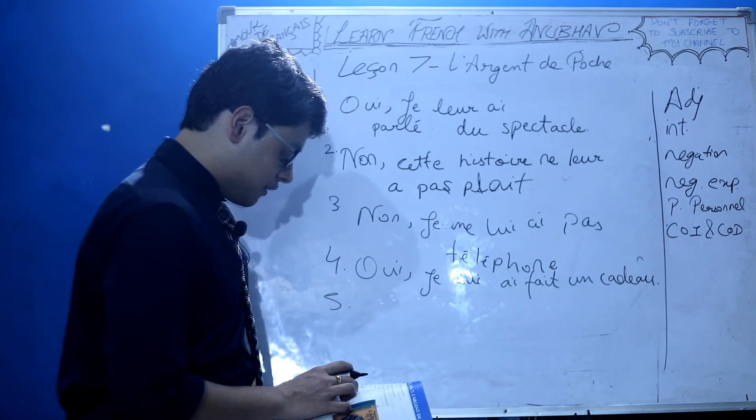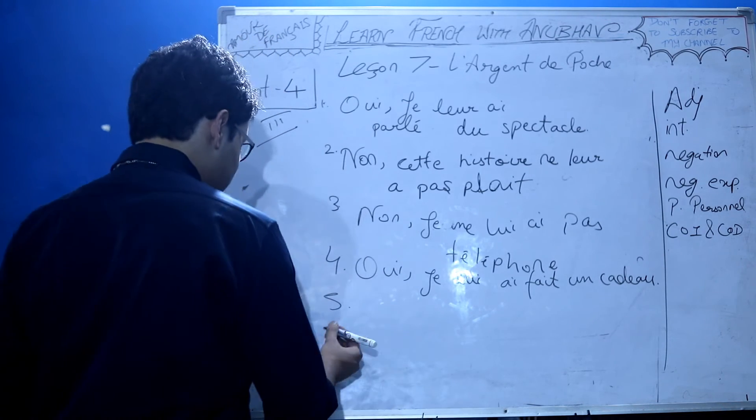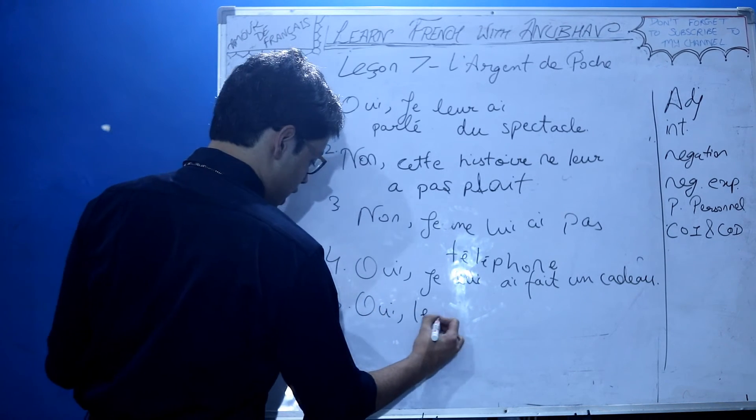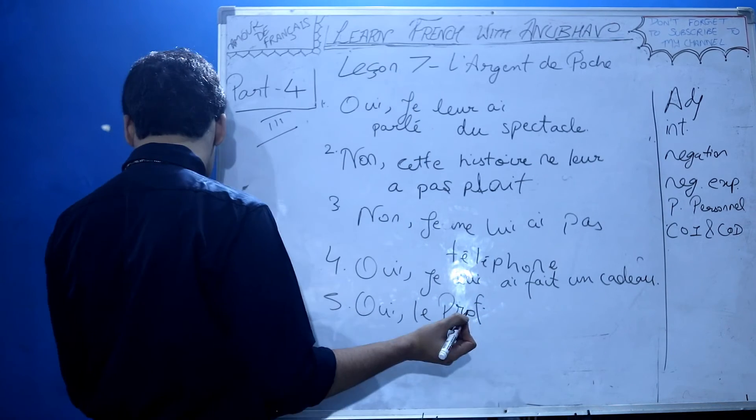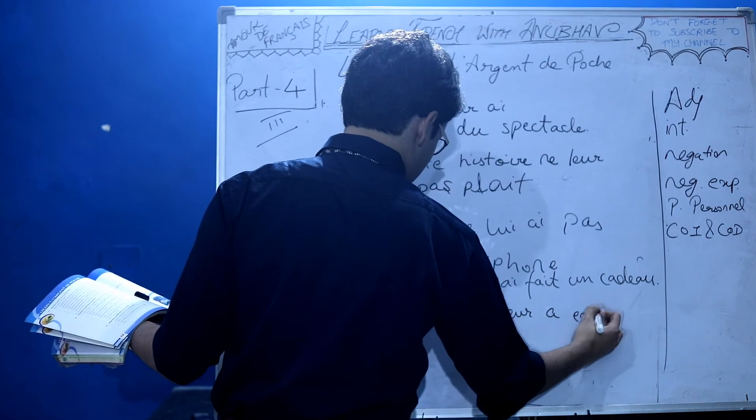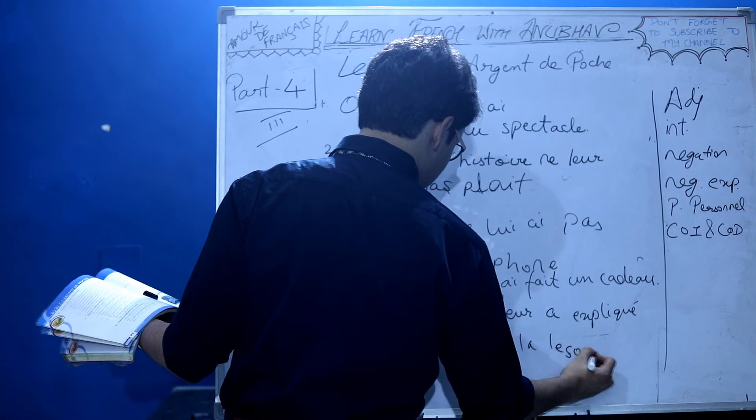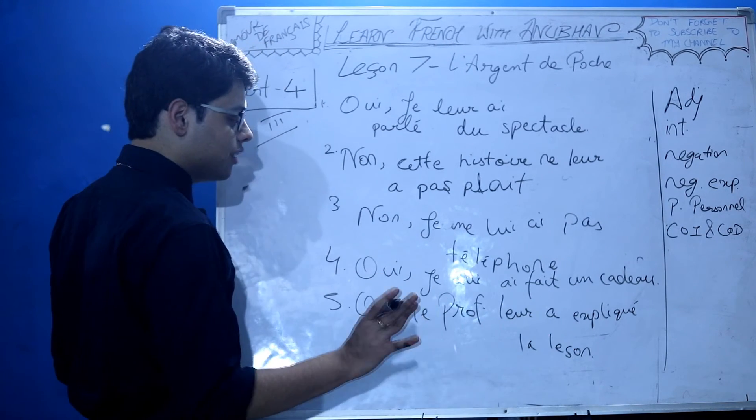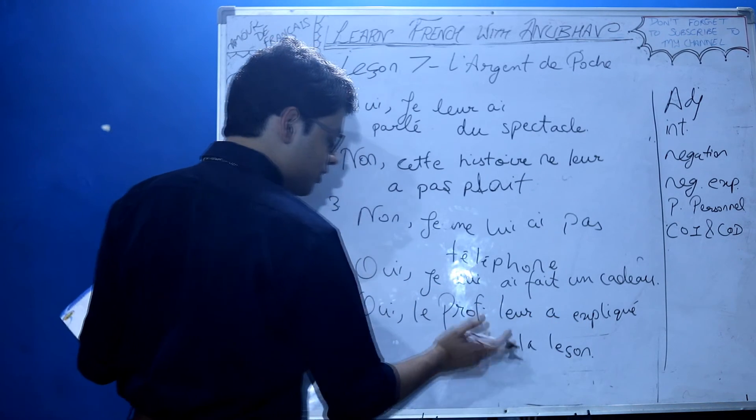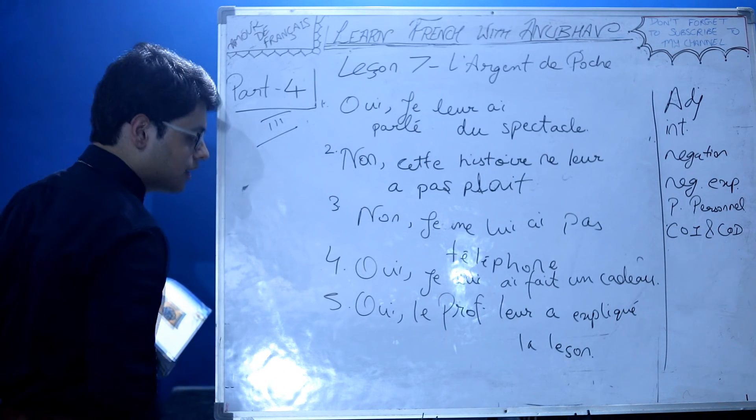Fifth: Est-ce que le professeur a expliqué la leçon aux étudiants? Did the professor explain the lesson to the students? Yes, he did. Oui, le prof leur a expliqué la leçon. Could have been a combined question of COI and COD - it would have been 'la leur' to remove la leçon. But here we're doing lui and leur only, so la leçon continues like this.